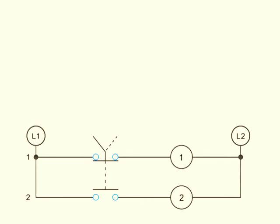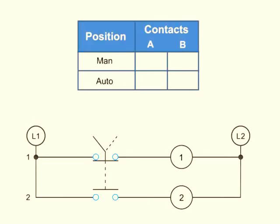Contact position on a selector switch can easily be illustrated using truth tables. This truth table illustrates the manual or automatic contact positions of a two-contact selector switch. Each contact on the line diagram is marked A or B. The positions of the selector switch are marked MAN for manual or AUTO for automatic.